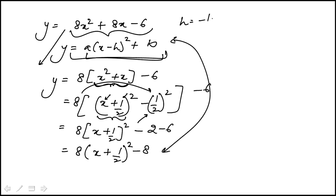h is minus half, and k is minus 8. If I look at the answer choices, that's choice A. This is one way to do it.